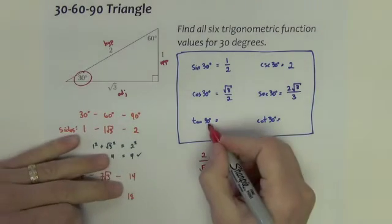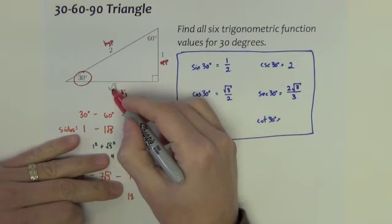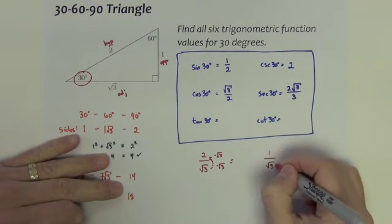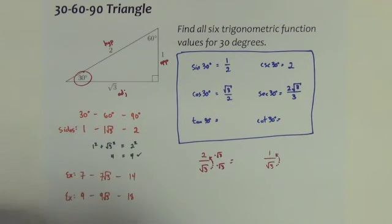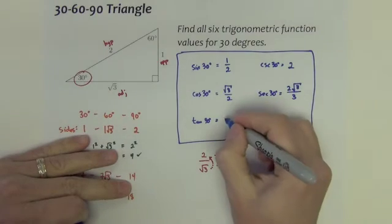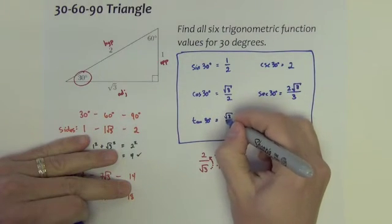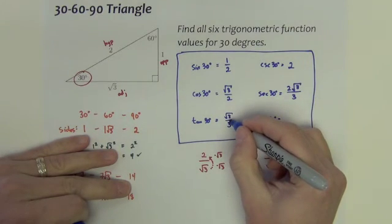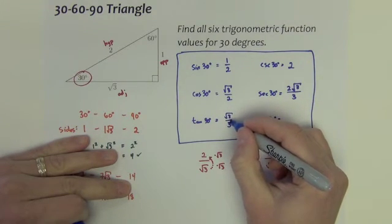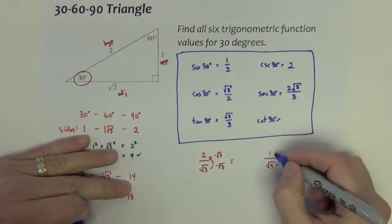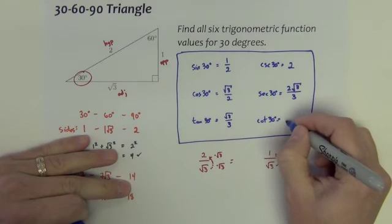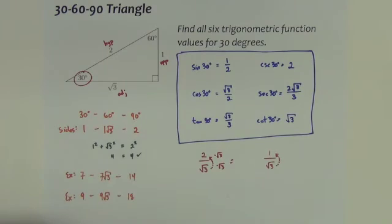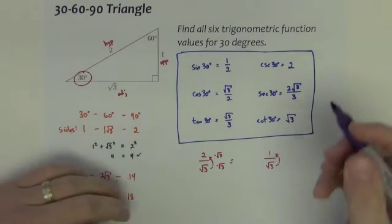For the tangent of 30, it's opposite over adjacent. So, 1 divided by square root of 3, which we bring that radical up. I'll let you do the work if you want. But just to see it like that is helpful. So, we bring the radical up, and it is square root of 3 over 3. Cotangent is the reciprocal of this one. If I reciprocal this one right here, or actually I prefer to reciprocate this form, we'd end up with just square root of 3. There are your 6 trig function values for 30 degrees.